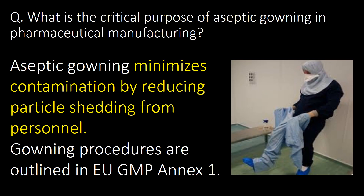What is the critical purpose of aseptic gowning in pharmaceutical manufacturing? Aseptic gowning minimizes contamination by reducing particle shedding from personnel. Gowning procedures are outlined in EU GMP Annex 1.